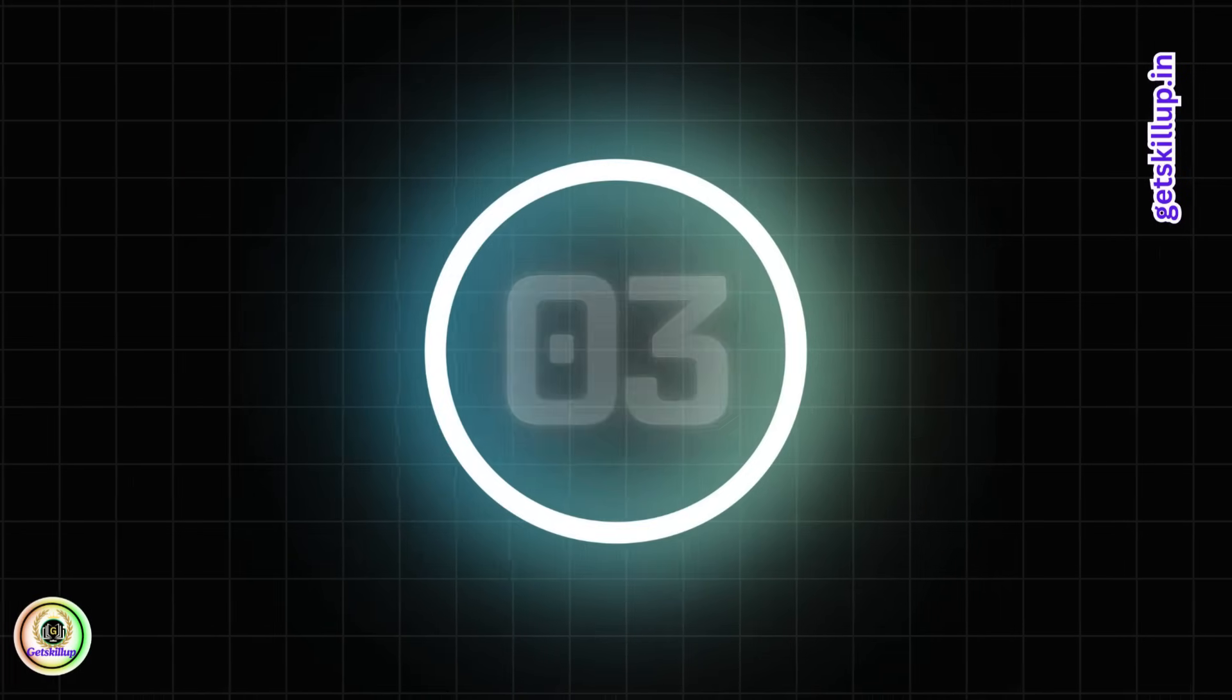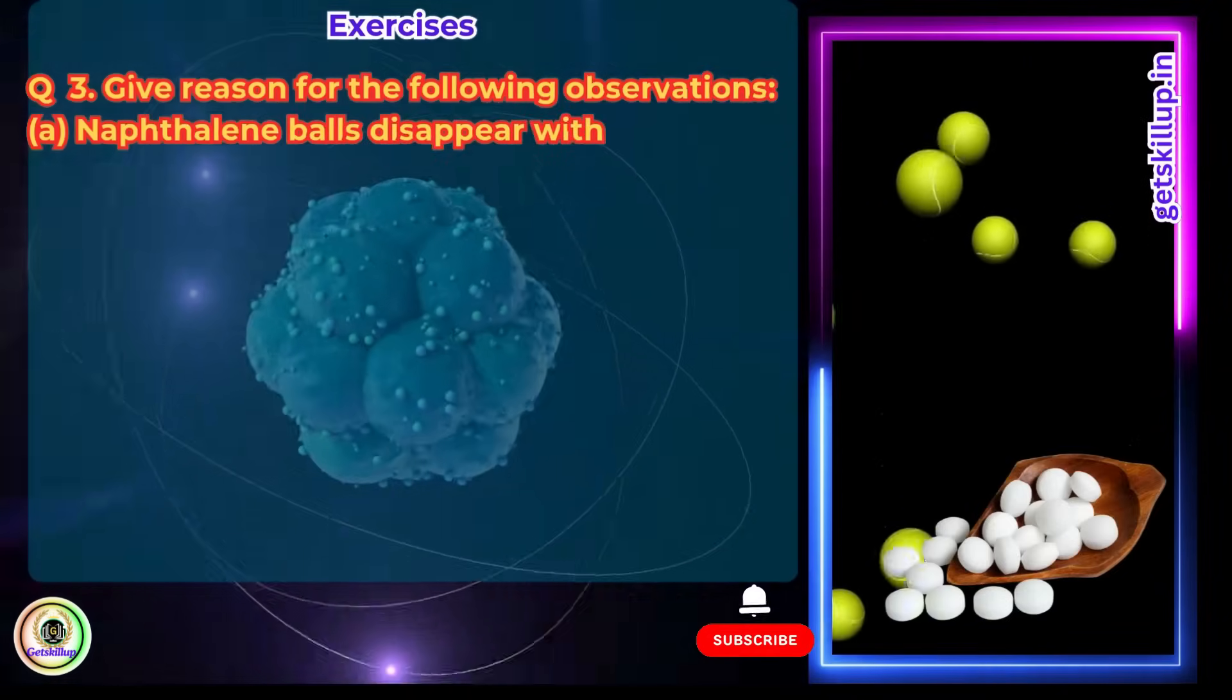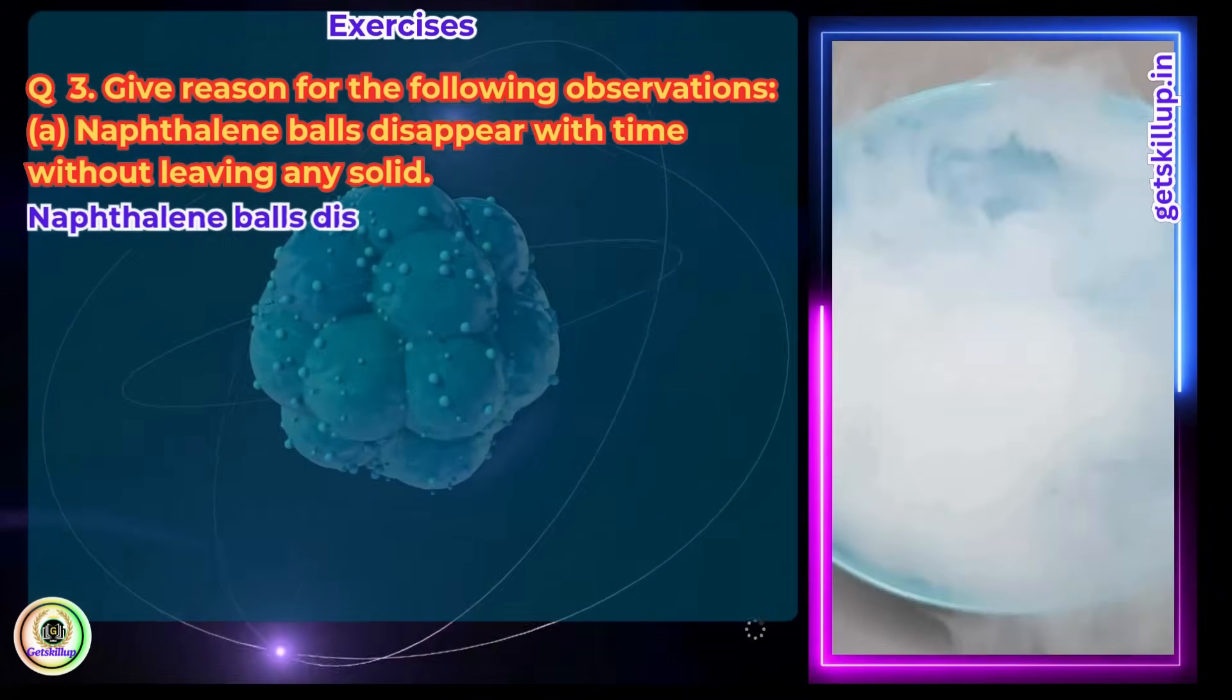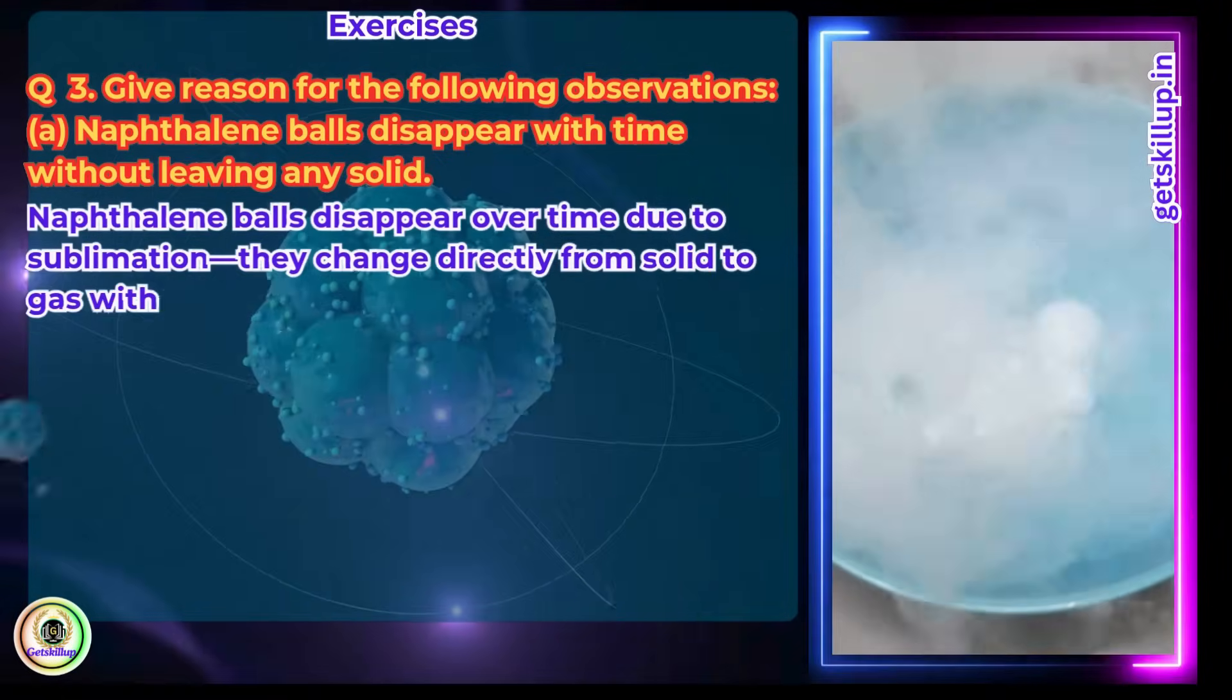Question 3: Give reason for the following observations. a. Naphthalene balls disappear with time without leaving any solid. Answer: Naphthalene balls disappear over time due to sublimation, which changes directly from solid to gas without becoming liquid.